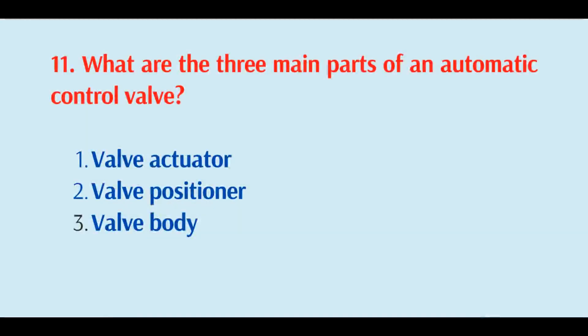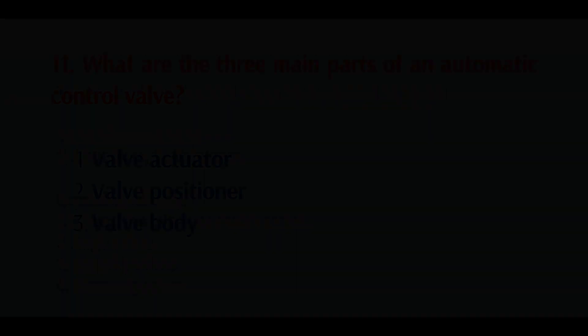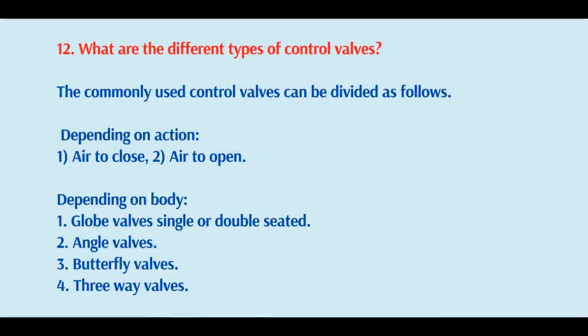What are the three main parts of an automatic control valve? Valve actuator, valve positioner, and valve body.